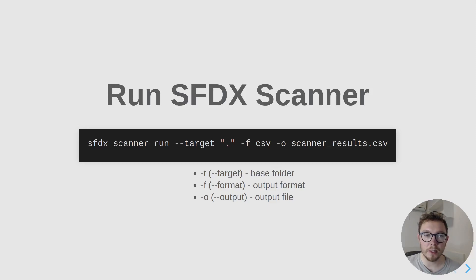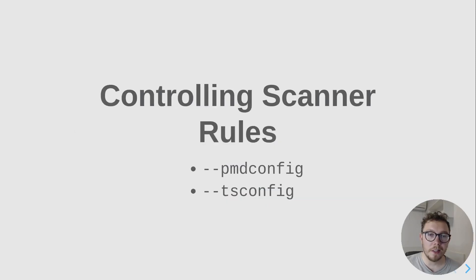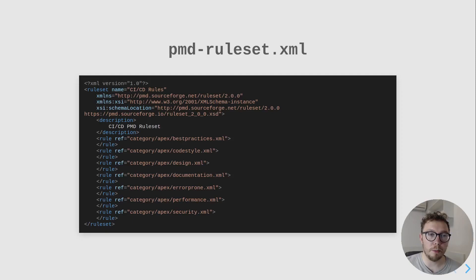We need to pass in the target, which is going to be the current directory with dot, the format with dash F. We want CSV in this case, and then the output file, which would be ScannerResults.csv. Additionally, we can control the scanner rules by passing in additional configs — PMD config or TypeScript config. You can see an example PMD rule set here where we're breaking down the categories. If you want to see this source code, check the links below for the full article write-up.